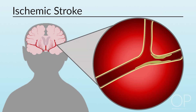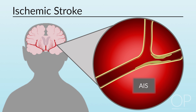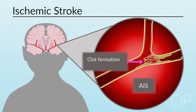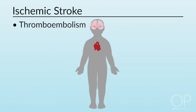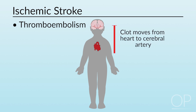An ischemic stroke occurs when brain tissue is damaged due to the blockage of an artery or vein. An arterial ischemic stroke, or AIS, is caused by the loss of downstream blood supply when an artery is occluded. This can result from areas of vessel lumen narrowing or endothelial injury, an increase in clot formation — what we call hypercoagulability — or thromboembolism, when a clot formed elsewhere in the body, such as in the heart, moves and becomes lodged in a cerebral artery.